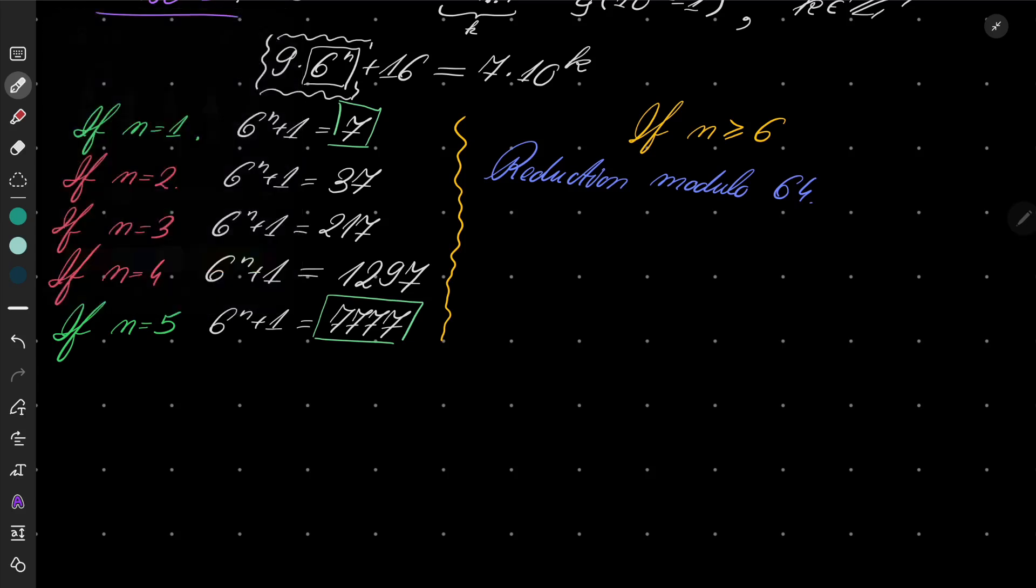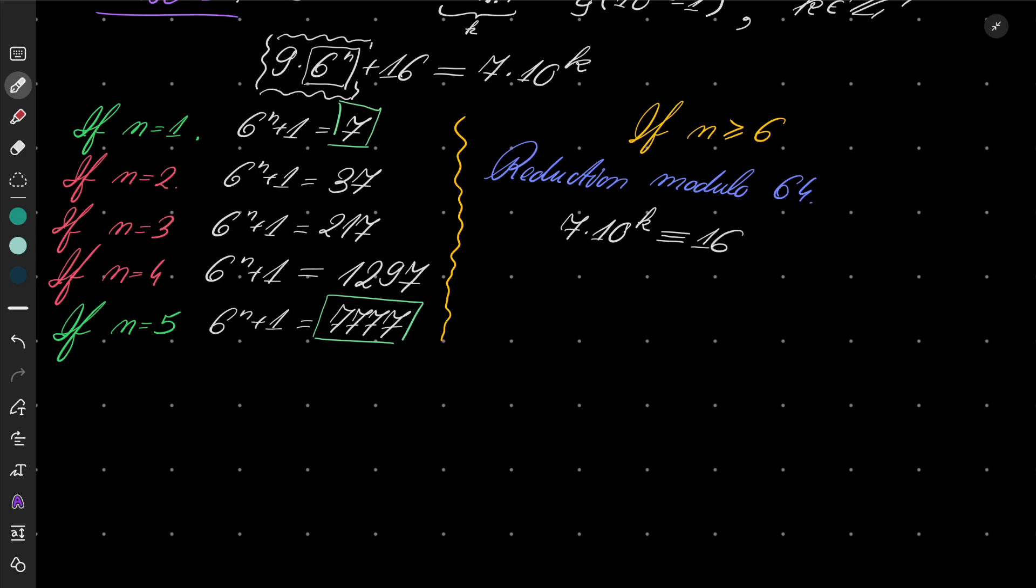So the following should be true: 7 times 10 to the power of k should be congruent to 16 modulo 64.